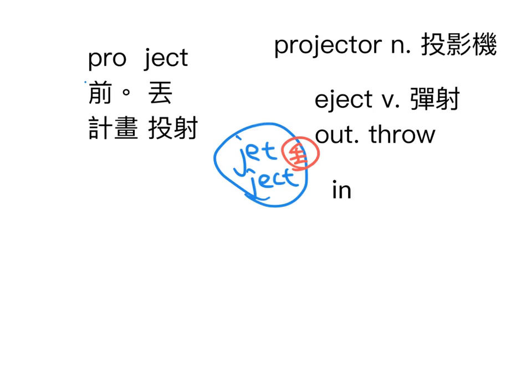比如说看电影时飞战斗机被击中，要赶快把座椅弹射出去——EJECT。接下来INJECT，IN是进去，JECT是丢，东西丢进去，把东西打进身体里面，INJECT这个字是注射。